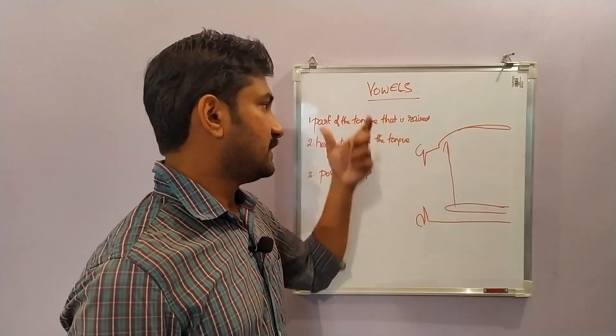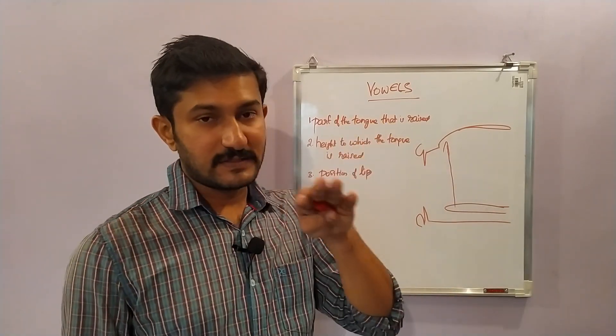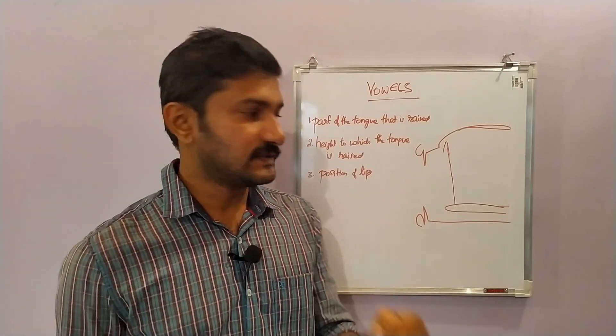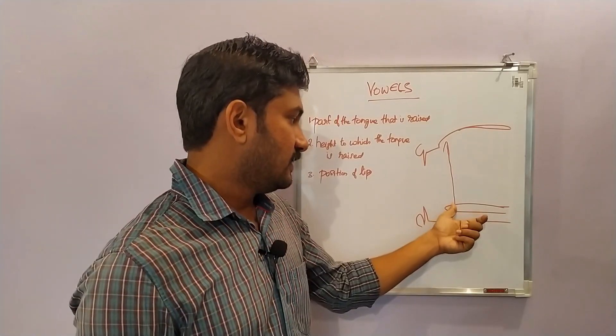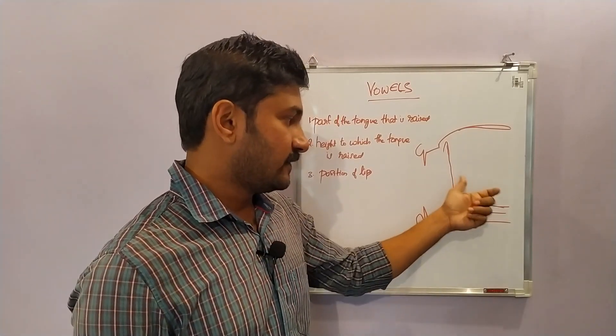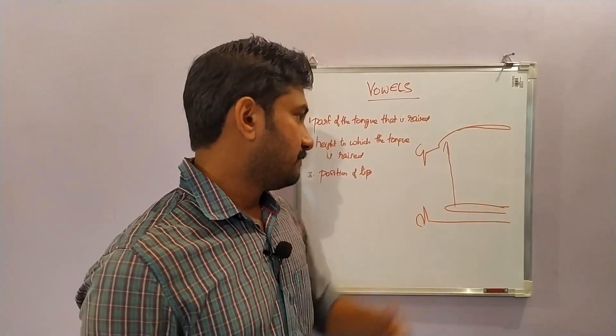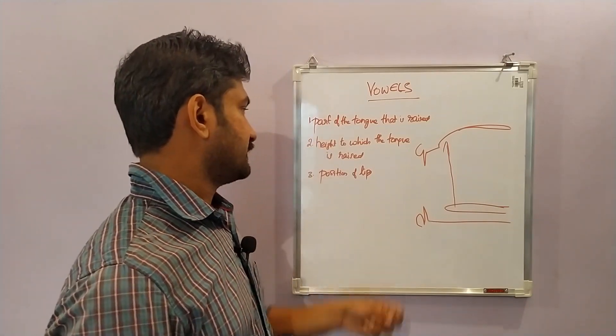So depending on the part of the tongue that is raised, we have three classifications: the front vowel, the central vowel, and back vowels.